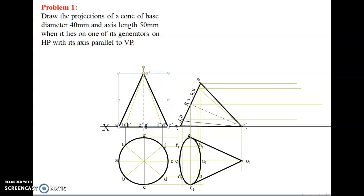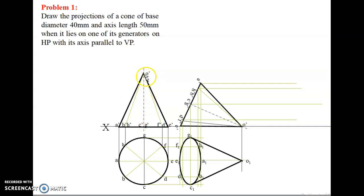From here, draw a straight line for 50 mm because the axis length is 50 mm. Mark this point as O dash — that is the apex point. From O dash, join A dash. From O dash, join B dash (H dash), C dash (G dash), D dash (F dash), and E dash. We have finished the initial step. In the third step, we are going to make one generator rest on HP.